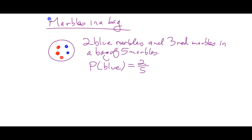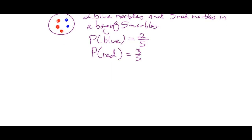What's the probability of getting a red marble? Three out of five. Now, where dependent probability comes in is when we go to draw another marble. We know there are two possibilities on the first draw — we could draw a red marble. So let's look at what happens if we drew red on the first draw.